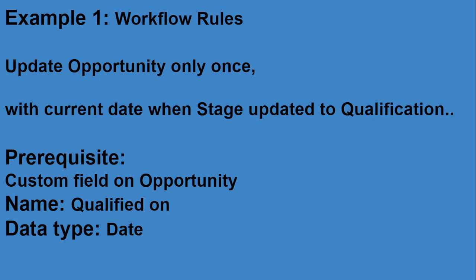That timestamp should be updated in a specific field, and it should happen only once. Once the stage moves to Qualification, that time should be recorded. If somebody updates it back to Qualification again, it should not re-record — only the first time. Also, the field should be made read-only so users can't update it manually, ensuring we get the exact date.